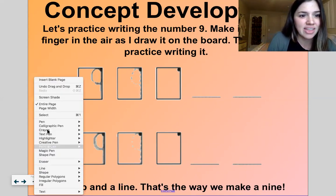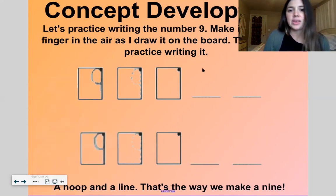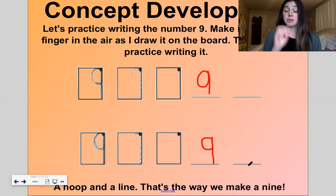A hoop and a line, that's the way we make a nine. That's a good one. So this number nine is made up of a curvy line and a straight line. So let's practice together. Ready? A hoop and a line, that's the way we make a nine.